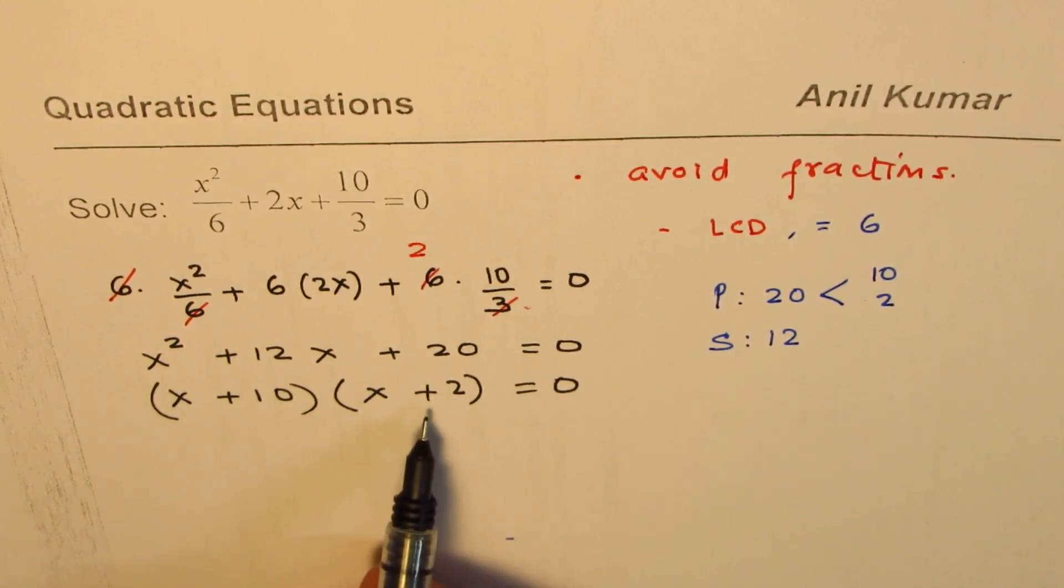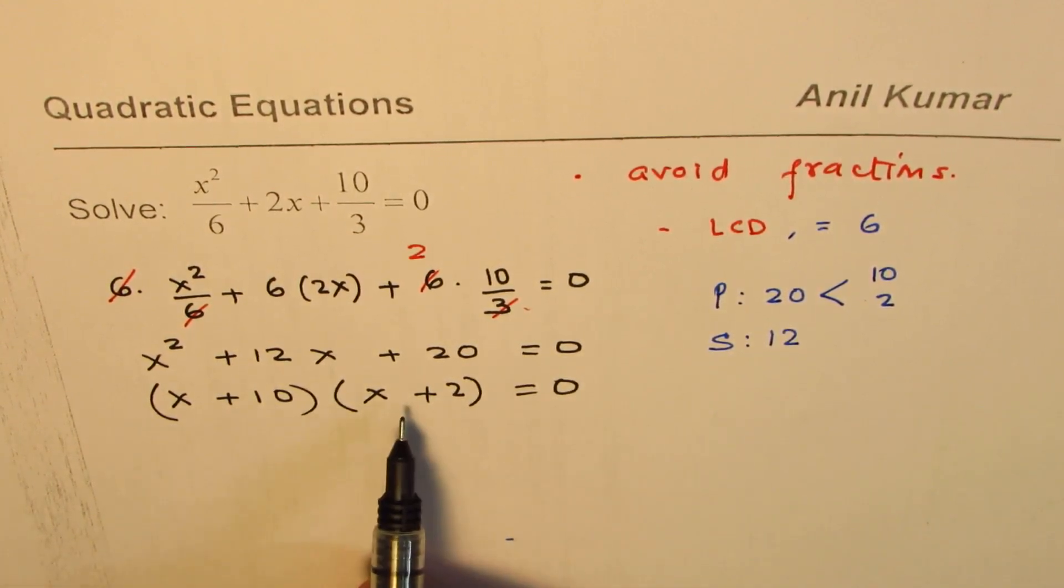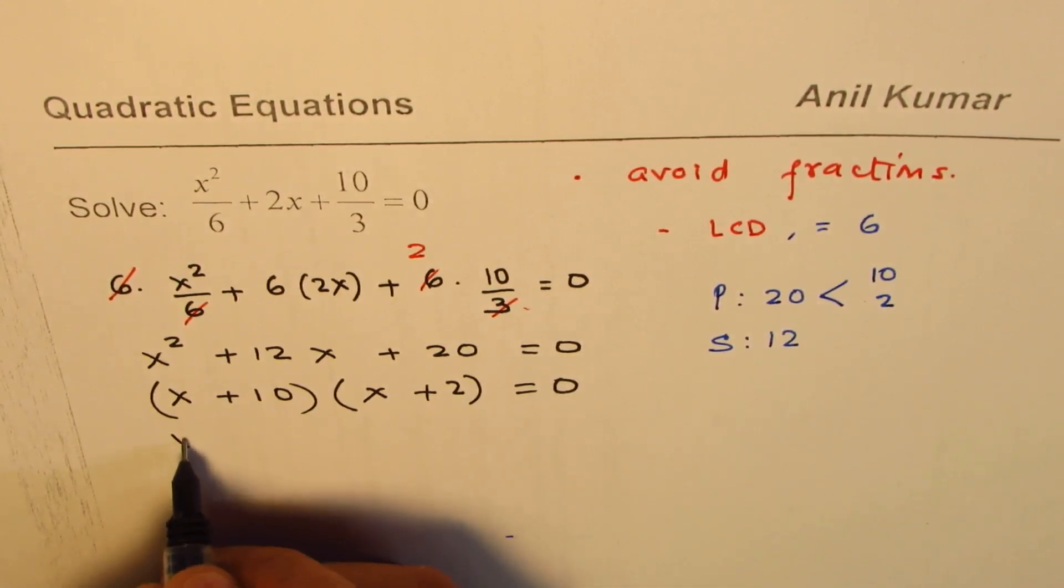Now once you have it in factored form, solution is easy. Each factor should be equated to 0. So there are two solutions to this.